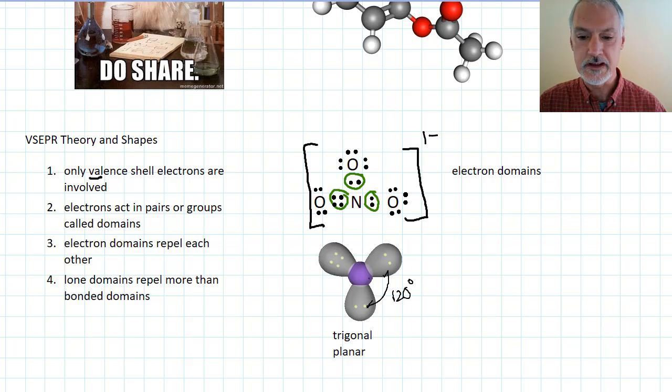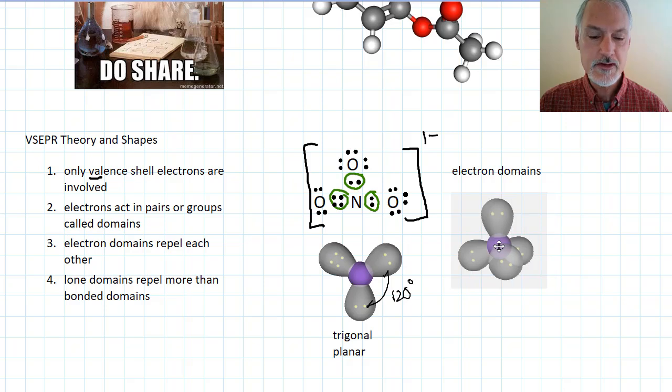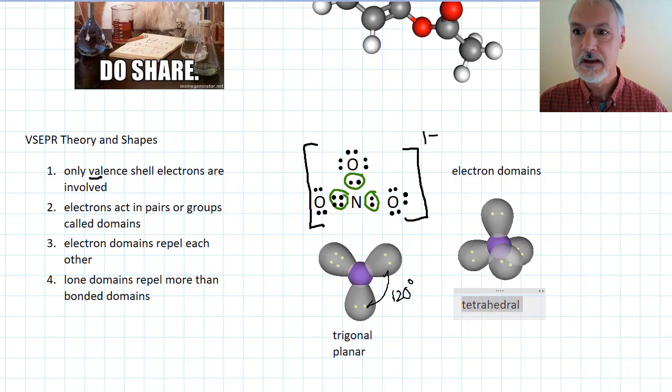This isn't the only shape that can take up. There are some other common shapes, so I'm going to start by introducing a few of those right now. Sometimes you'll find four domains around that central atom. Four domains make a three-dimensional shape, which we refer to as a tetrahedral. And tetrahedrals tend to have angles somewhere around 109.5 degrees.